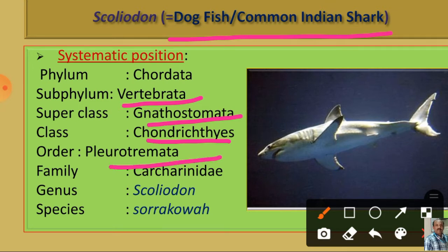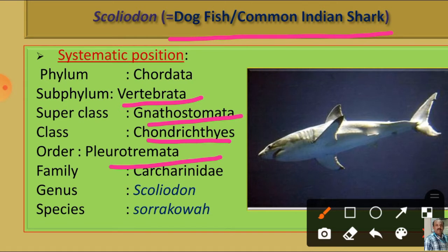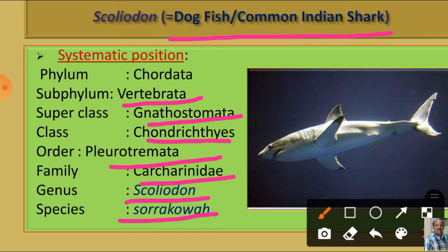It belongs to the order Pleurotremata as it has a laterally compressed body as well as lateral gill slits. Along with that, pectoral fins are moderately sized and the tail is not clearly marked from the trunk. It belongs to the family Carcharhinidae as it has a well-developed nictitating membrane. Its scientific name is Scoliodon — it belongs to the genus Scoliodon because spiracles are absent and teeth are non-serrated with swollen bases. It belongs to the species sorrakowah as the base of the anal fin is more than twice the length of the second dorsal fin.